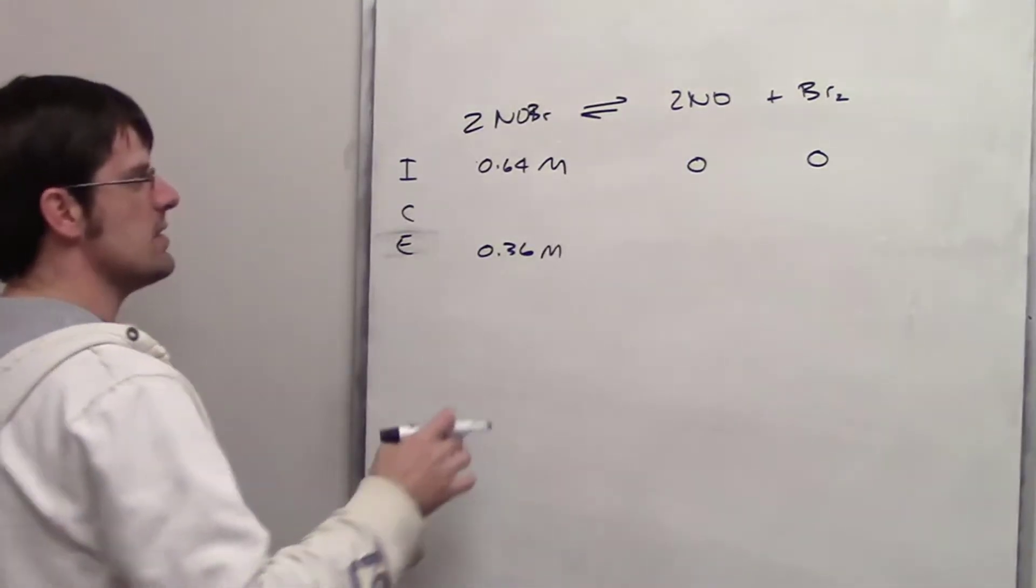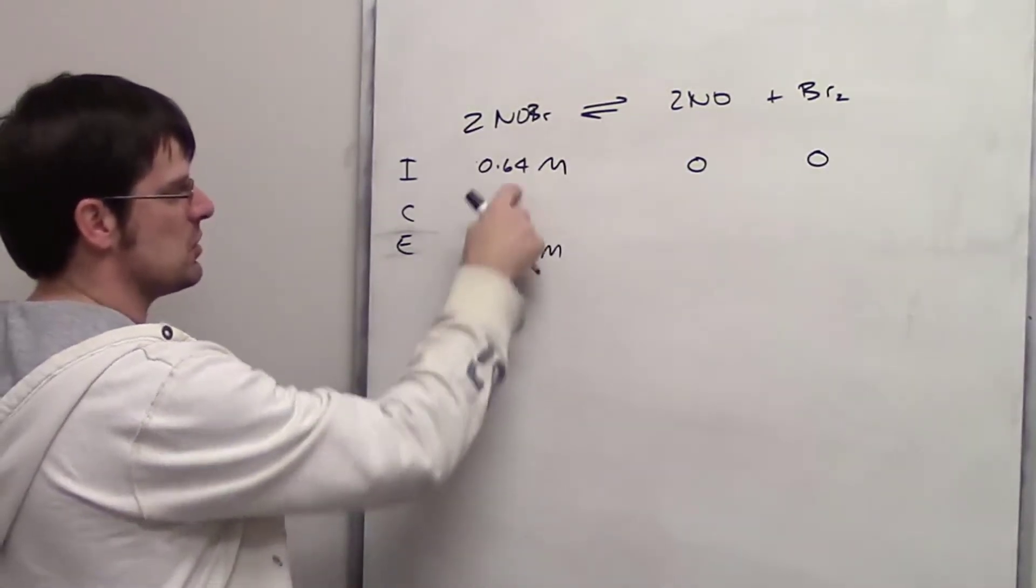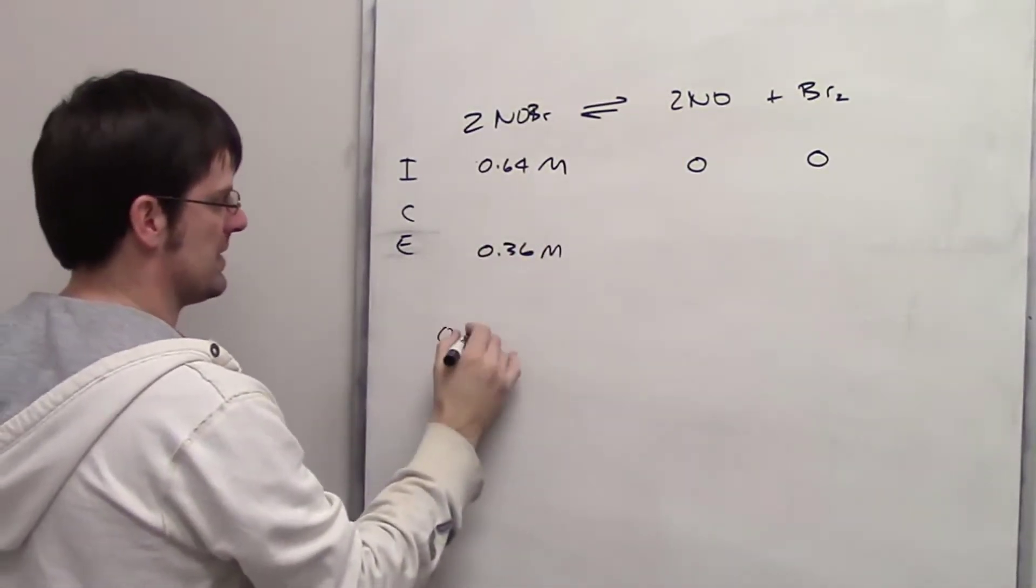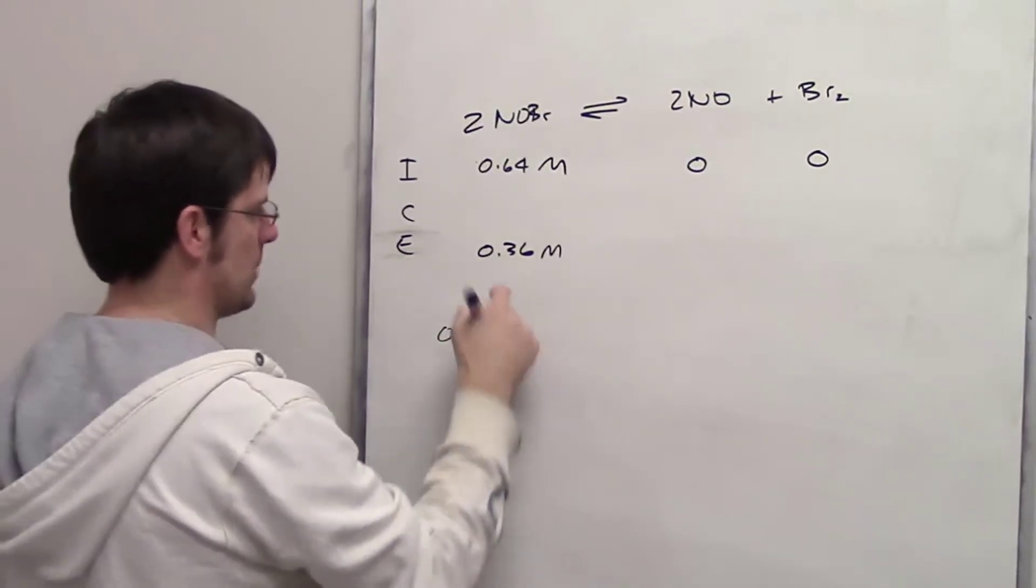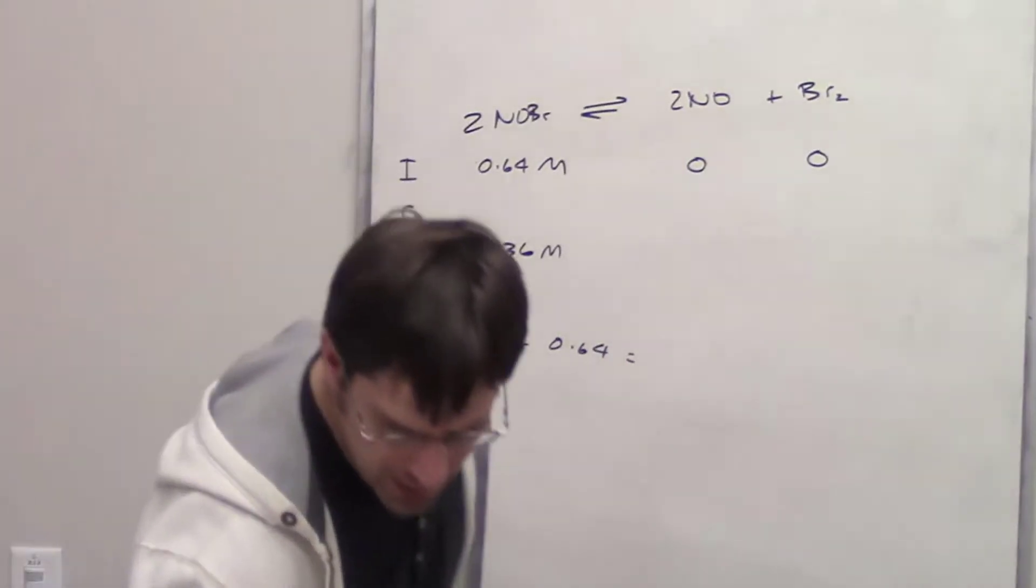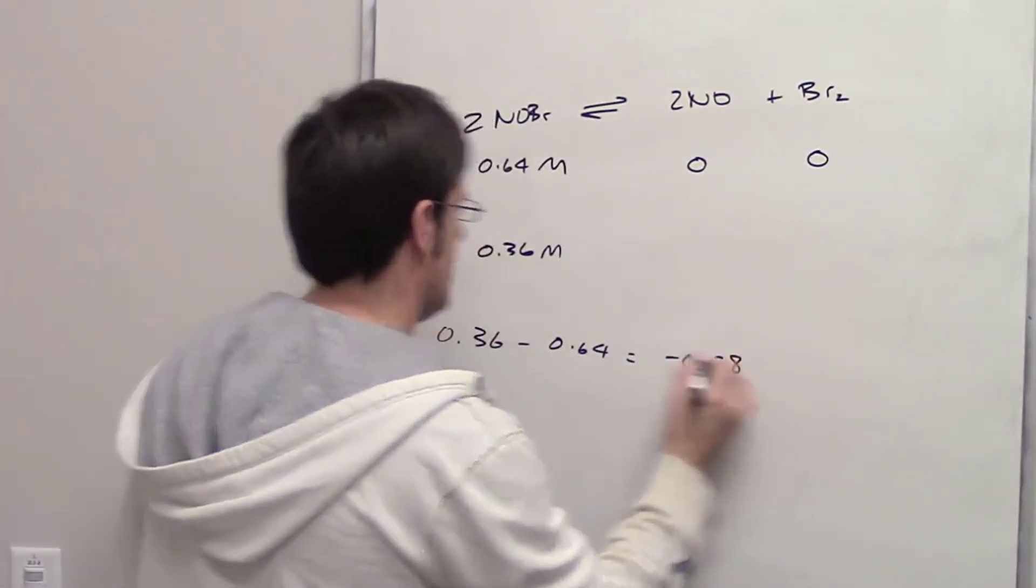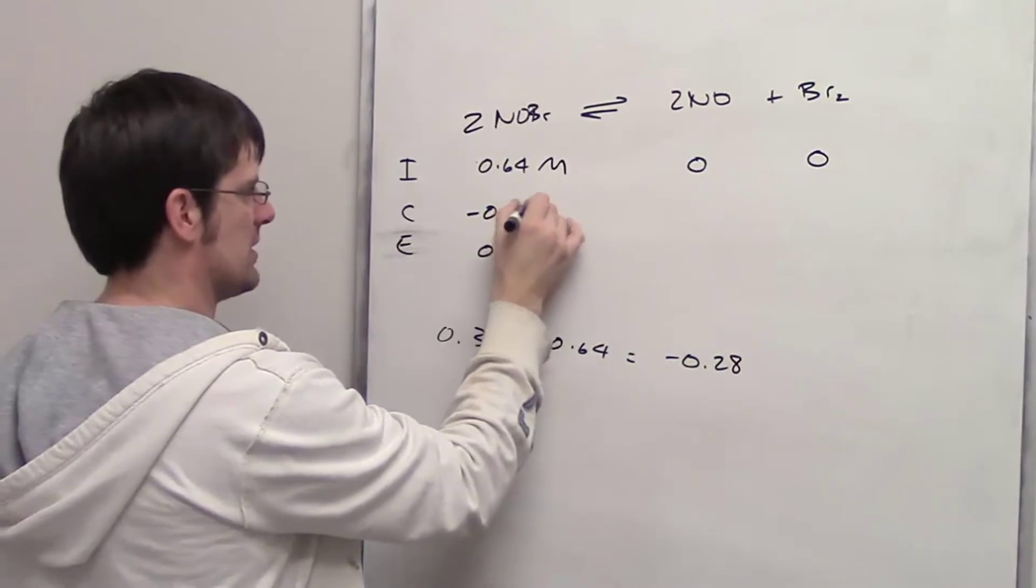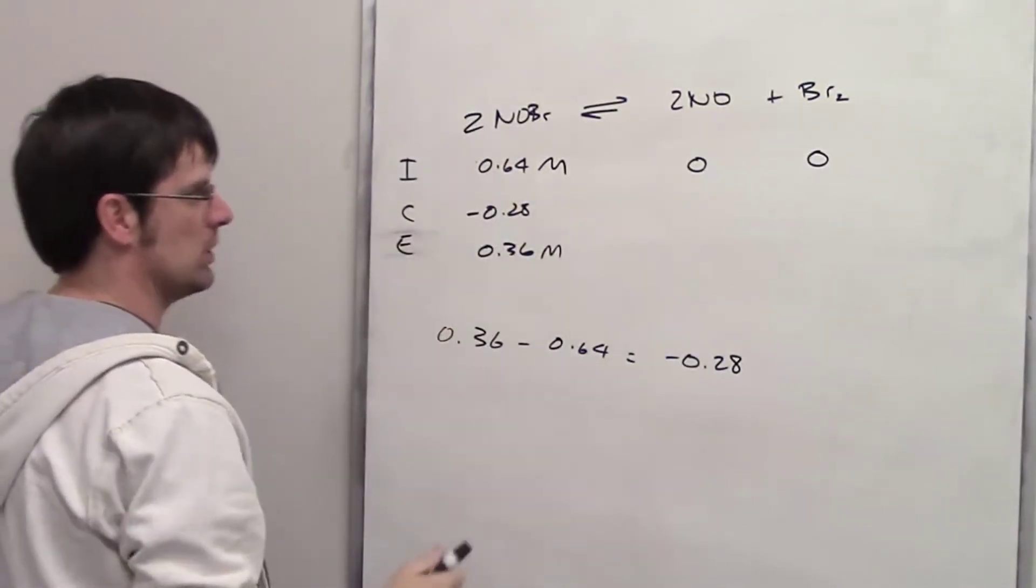We handle this by finding the difference between these two. The final equilibrium concentration 0.36 minus 0.64 equals negative 0.28. That's the change in concentration as this reaches equilibrium.